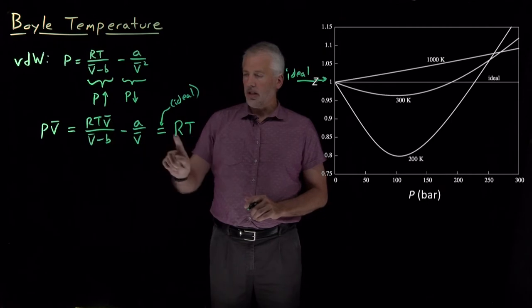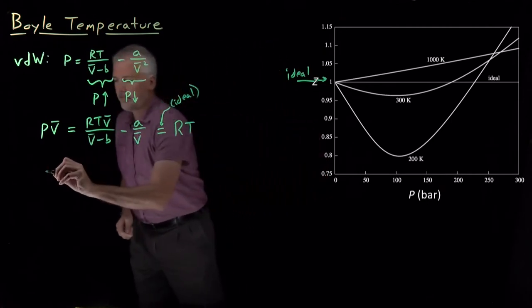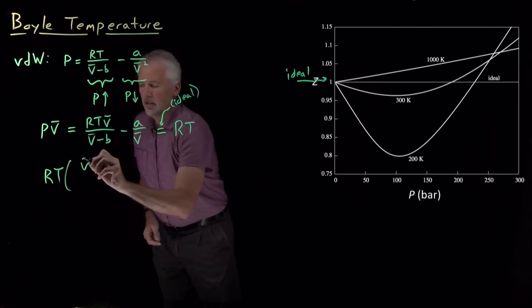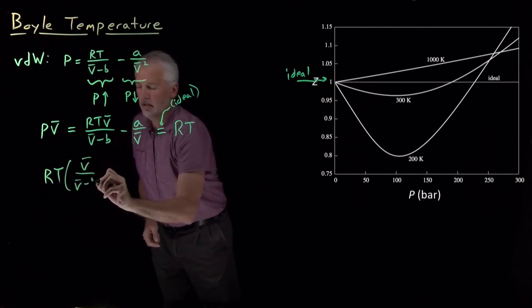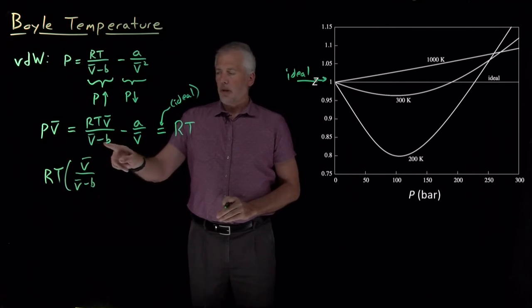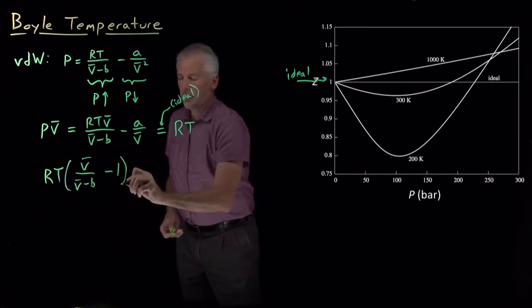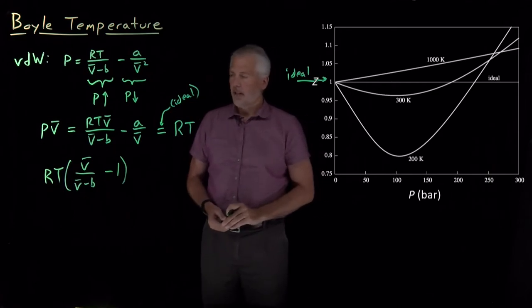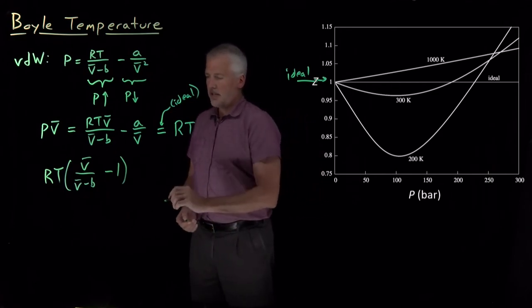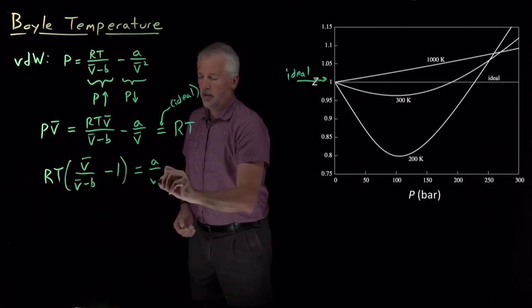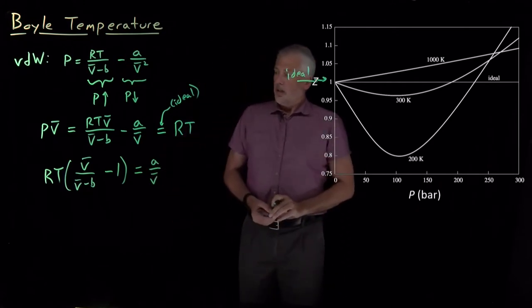We've got an RT on the left and an RT on the right. So if I collect those terms, I've got an RT times V-bar over V-bar minus B. If I subtract this RT when I bring it over to the left-hand side, I can get this. And then that's all equal to if I put the A over V-bar on the other side.